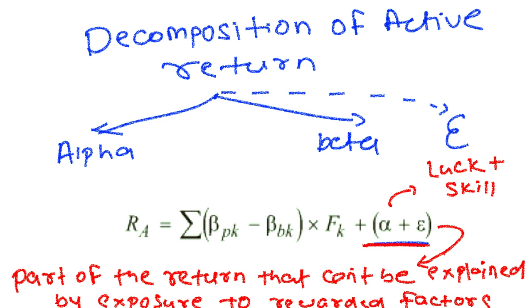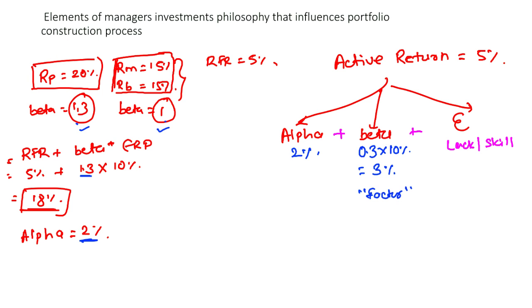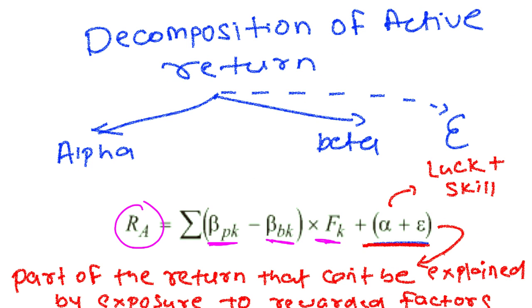So this equation makes sense. Return on the active return is basically difference of two betas into the factor. In the previous example, the difference of the two betas, 1.3 and 1, was 0.3, and then 0.3 into this 10%, the return for that factor, plus alpha. So if I write 1.3 here and 1 here, and the return for that factor was 10%, this term gives us the 3%, and then alpha and the epsilon term combined give us 2%, and that's how we got the active return of 5%.